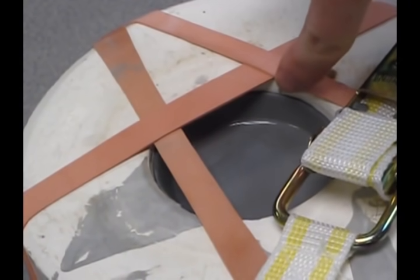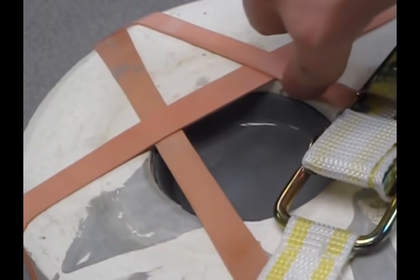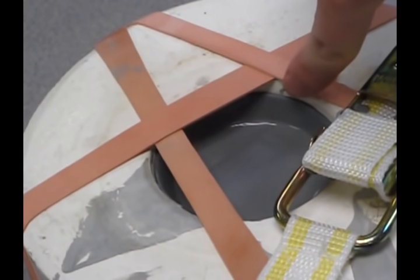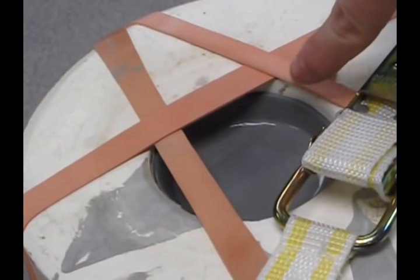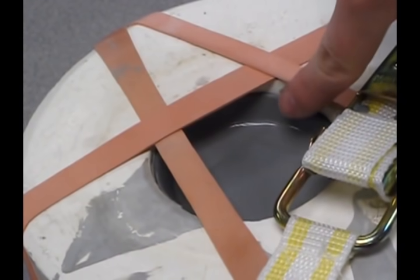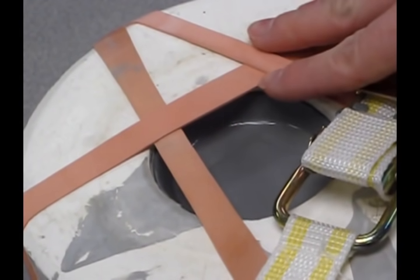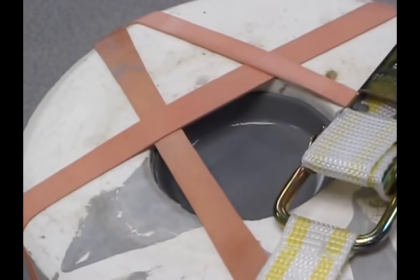So the clay was originally up at the brim of the mold, and now that slip, as the moisture has left the slip, the slip has dropped down. So it was here, now it's lower. The level has dropped.